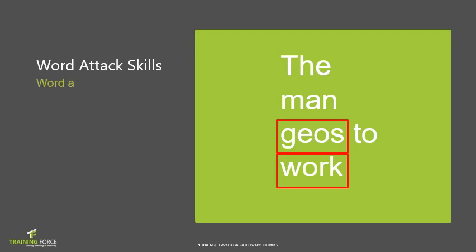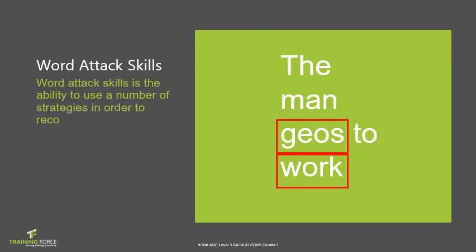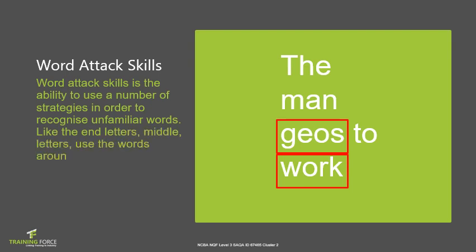Word attack skills are the ability to use a number of strategies in order to recognize unfamiliar words, like the end letters, middle letters, and the use of words around the known words. For example, we could easily make the assumption that the word 'gees' or 'geos' is actually 'goes,' just by evaluating and decoding the words before and after it.